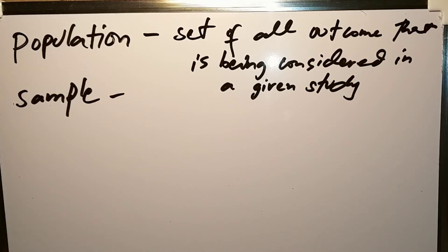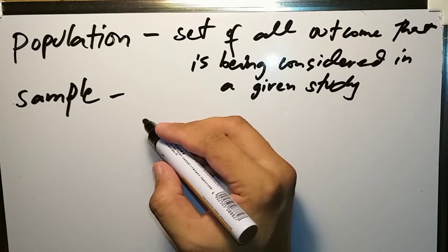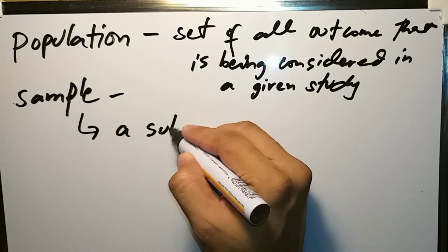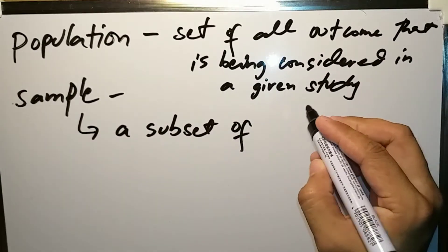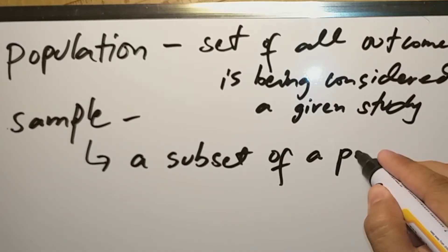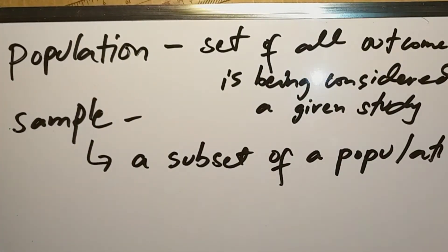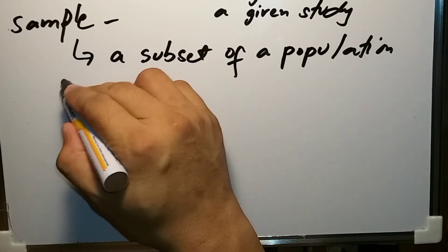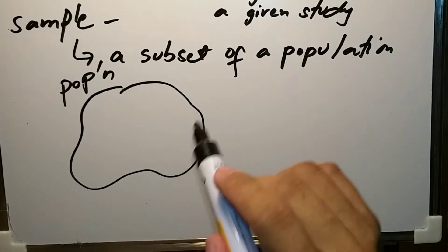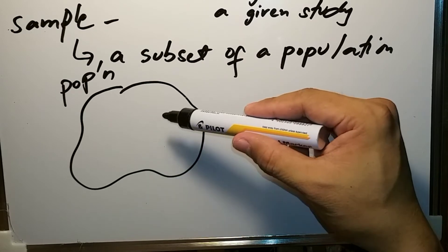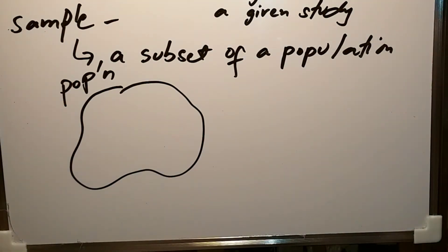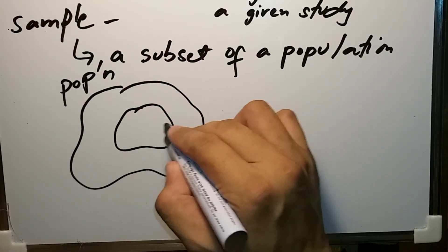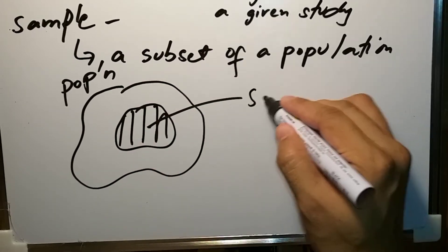Now, a sample is defined as a subset of a population. For example, within the population we take what we call a subset, and that subset is what we call the sample.